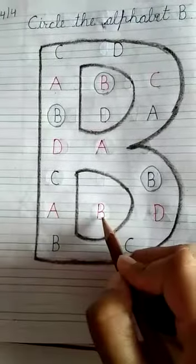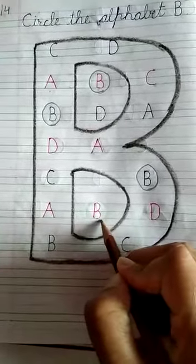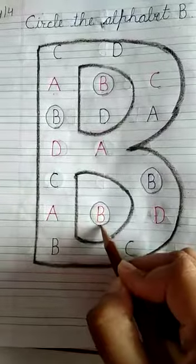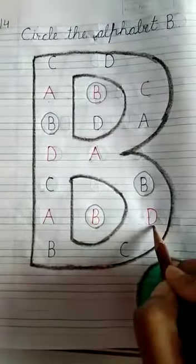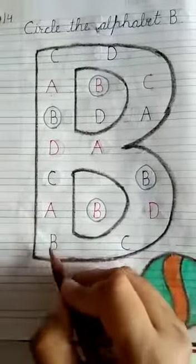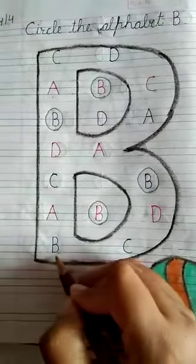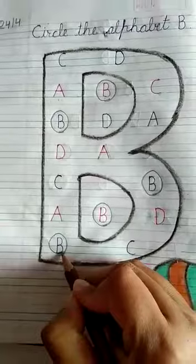A. B. Make a circle. And what is this? D. And this B. Make a circle.